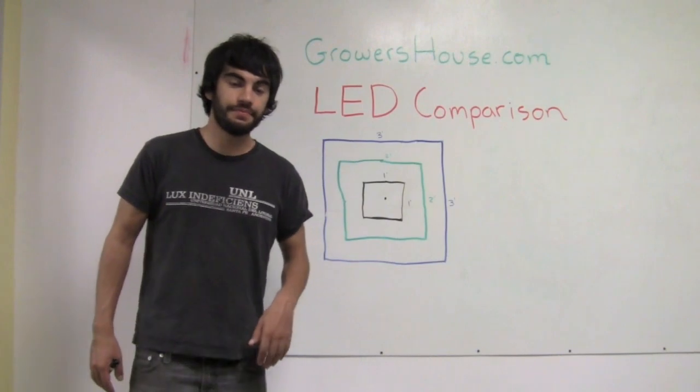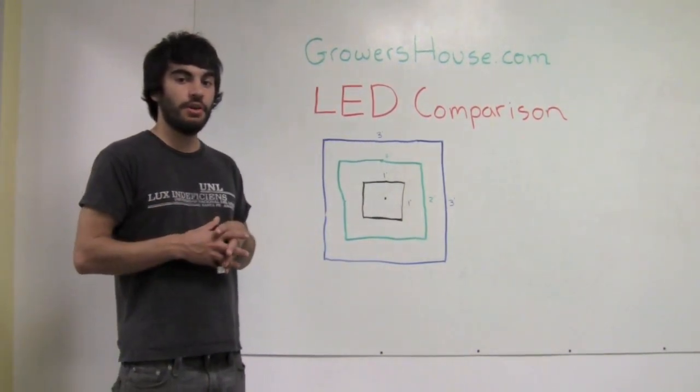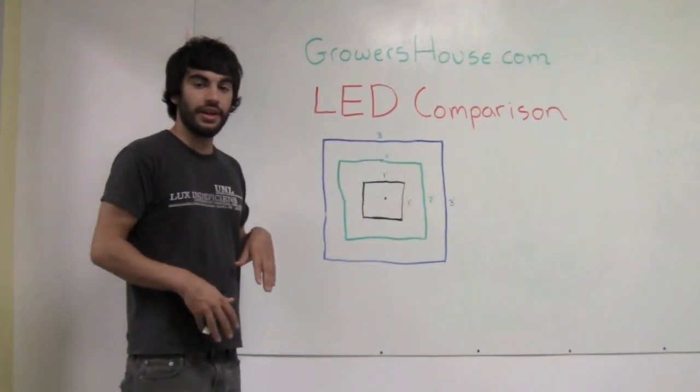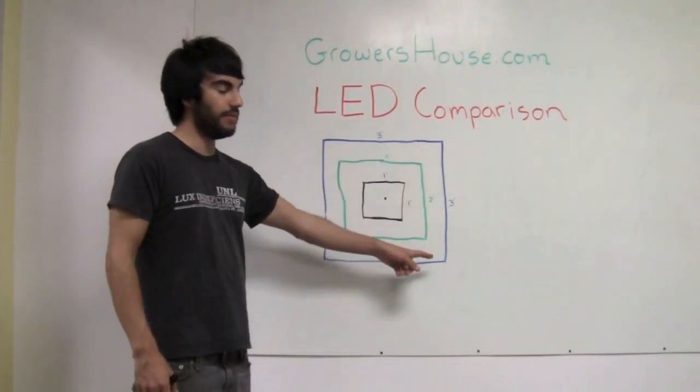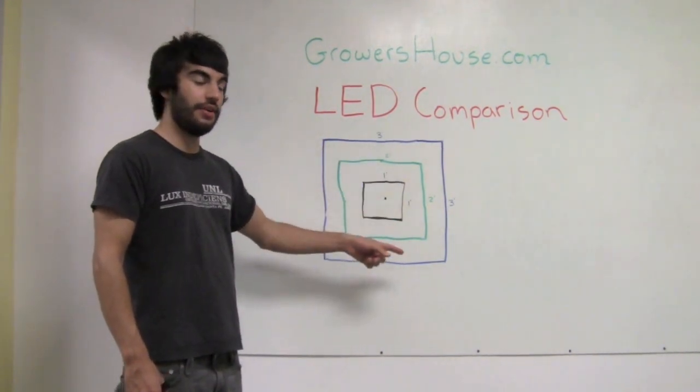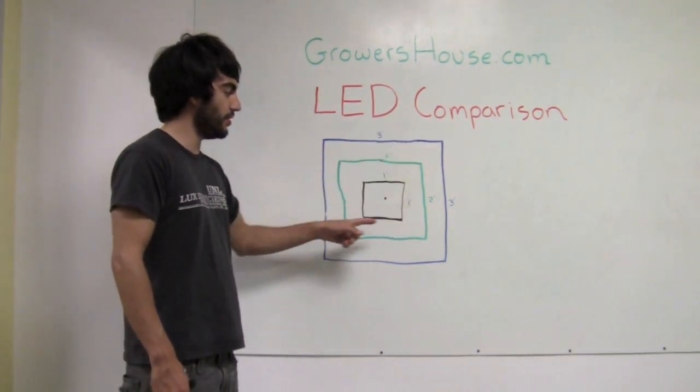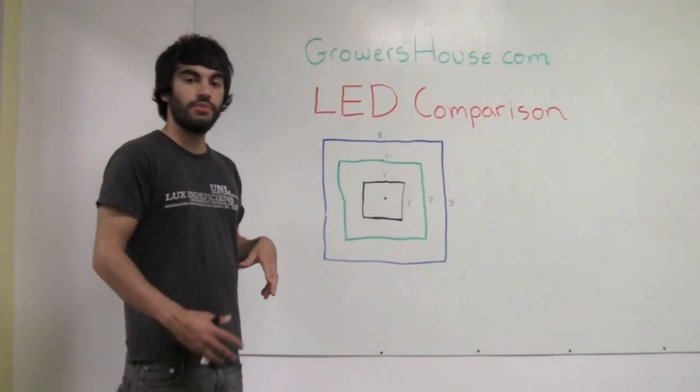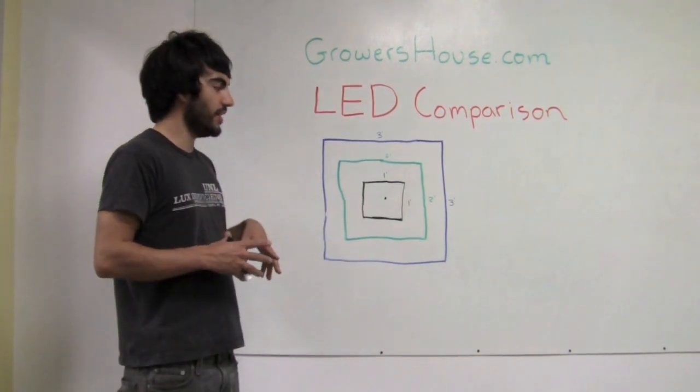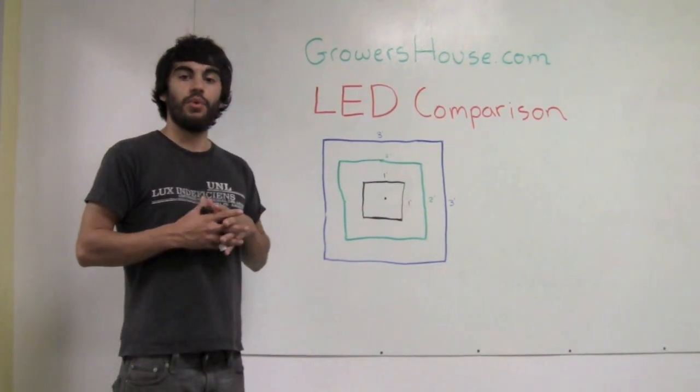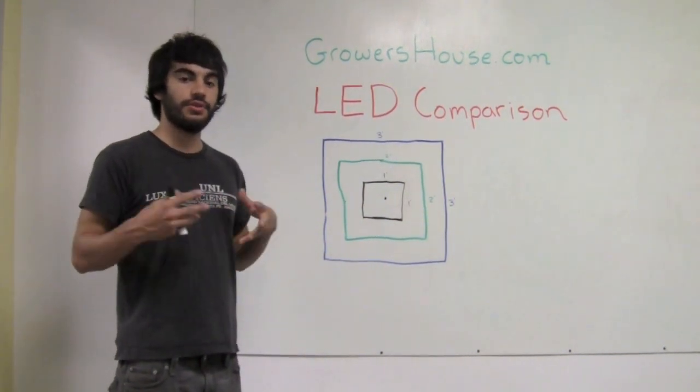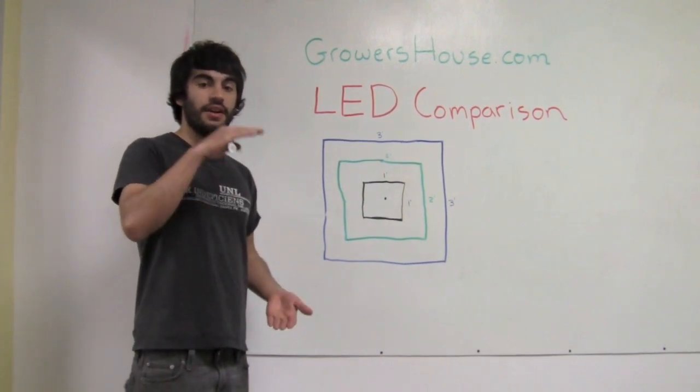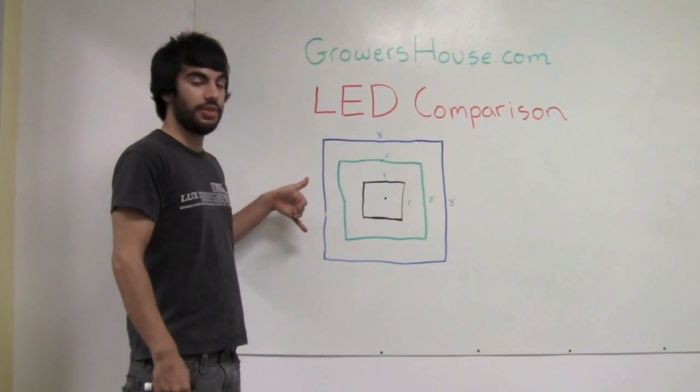What we did to test these lights against each other was put them over a grow area that was three feet by three feet. Within that three foot by three foot area we put a two foot by two foot square and a one foot by one foot square and a point in the middle. What we really wanted to do was test out what kind of PAR readings or photosynthetically active radiation readings these lights were giving out at different heights above this three by three foot footprint.